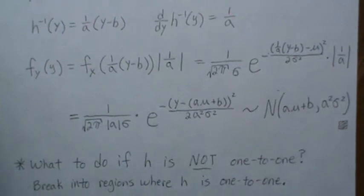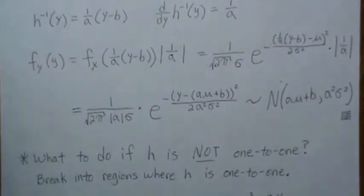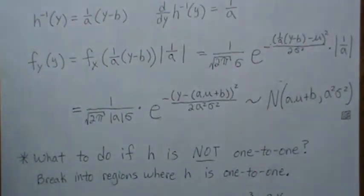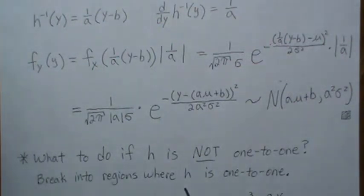In our theorem we assumed H is one-to-one. But what do we do if it's not one-to-one? One thing we do is break it into regions where H is one-to-one. Let's look at some examples before we state the next theorem.